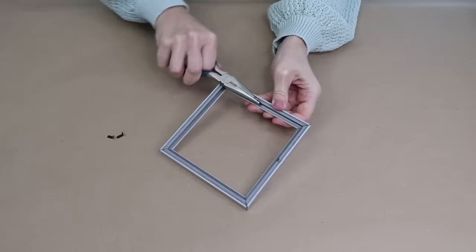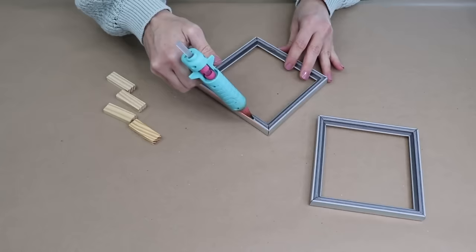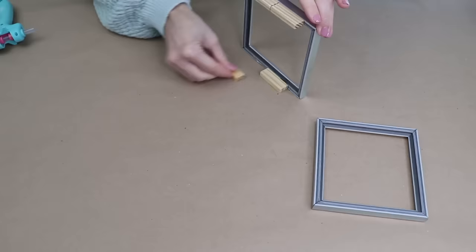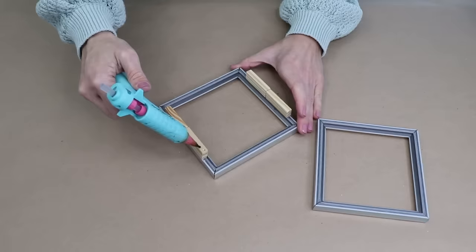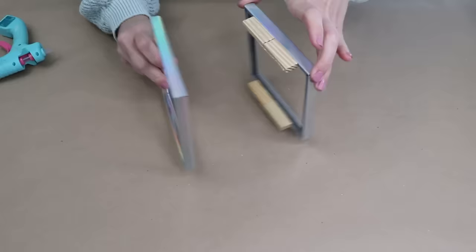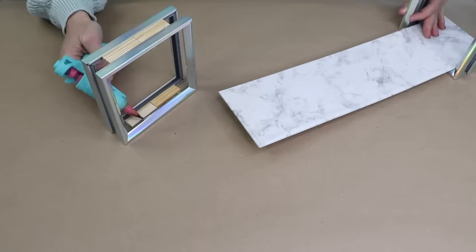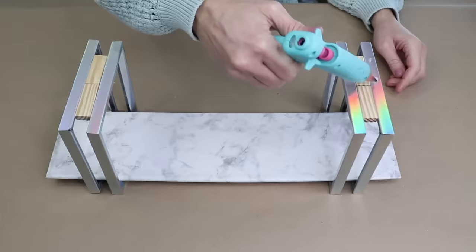Then use a pliers to pull out the fasteners. Use some hot glue to attach two blocks to the bottom of the frame. Then glue the second frame to the other side of the blocks. You're going to do this twice with a total of four frames. Now we have all the pieces to assemble our shelf.